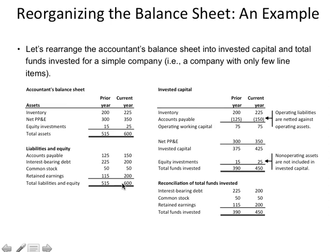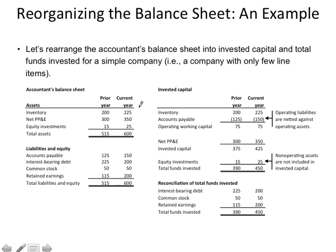Let's go through the simple balance sheet and label these items. Inventory: operating, tied to sales, operating — I need more inventory to sell more stuff. Label it one. Equity investments — we own shares of other companies we don't control — that's non-operating, a two. Microsoft owns one-fifteenth of Facebook; not directly associated with their operations but there's value to it.